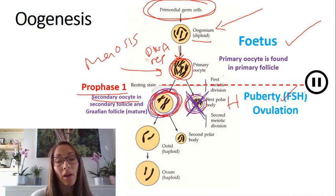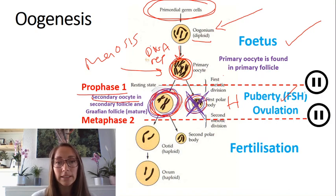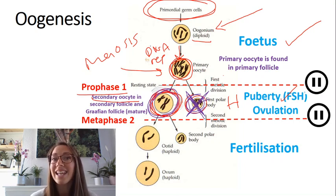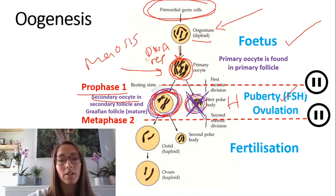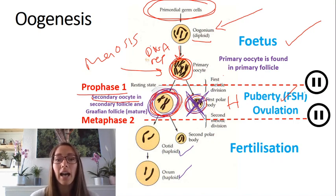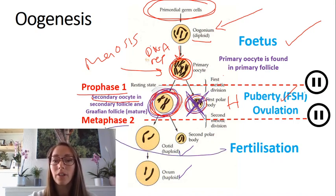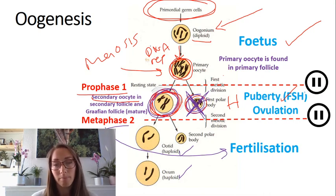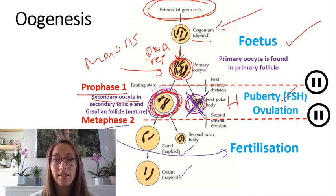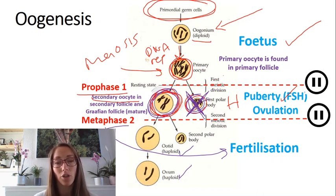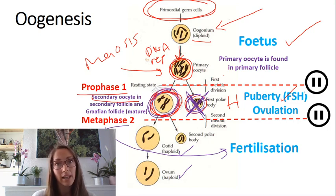Every month, when that individual goes through the menstrual cycle, they release the secondary oocyte during ovulation. However, most of the time these secondary oocytes don't develop into ootids and then ovum. These secondary oocytes are actually paused in metaphase 2, and only if they are fertilized by a sperm cell will meiosis 2 continue. Most secondary oocytes will be released during a period as a secondary oocyte and will not finish meiosis 2. Only with fertilization from sperm cells will meiosis 2 finish.